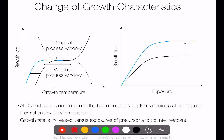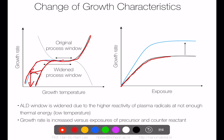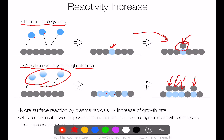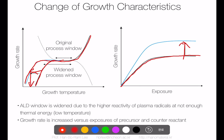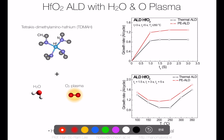Another advantage of plasma counter reactant is that it provides more energy for fast and clean reactions. On a growth rate versus temperature curve, using plasma extends the curve to lower temperature regions because we add more energy through the plasma. The saturation curve is boosted — plasma gives more complete oxidation or reduction of precursor molecules, increasing the growth rate.